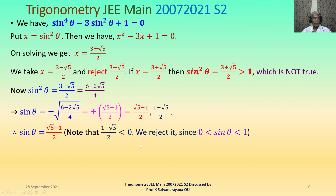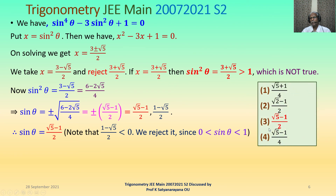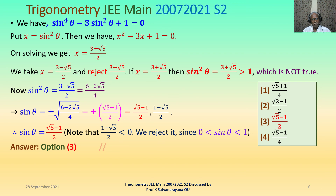Therefore our answer is sin θ = (√5 − 1)/2, which corresponds to option 3. That concludes the discussion of the problem on right angled triangles and finding the sine of an angle. I hope you have understood the problem and I wish you all the best. Thank you.